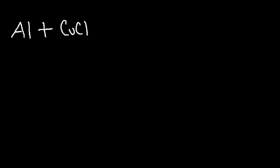In this video we're going to go over single replacement reactions. Let's start with the first one. Let's say if you have aluminum metal placed in a solution of copper chloride. What are the products of this reaction and how can you write the net ionic equation?